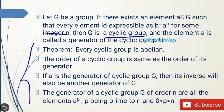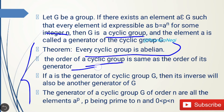In order to properly understand this concept, there are some theorems you need to understand. First: every cyclic group is abelian. Next: the order of a cyclic group is the same as the order of its generator — meaning if you have to find the order of a group and you are given the order of its generator, they will both be the same.